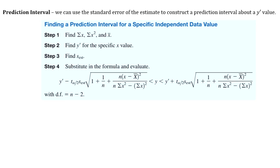Now we're ready to do the prediction interval. This is just like a confidence interval — we're basically going to get a lower bound and an upper bound for what we think a y value will be for a specific x value. You can see in step 4 the formula we're going to use, and we are going to have to actually use this formula. There's no way to do this in your calculator, so you will actually have to do this whole process yourself.